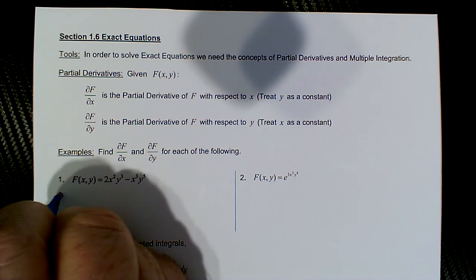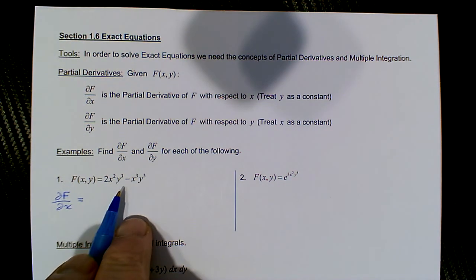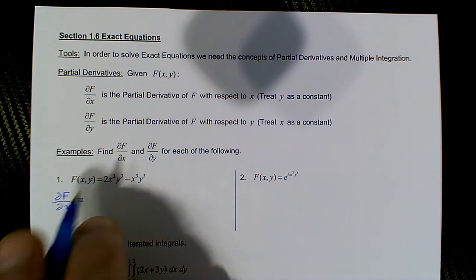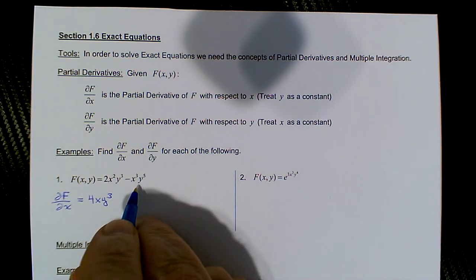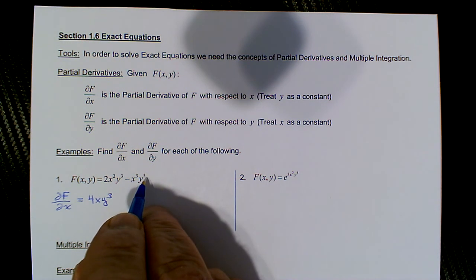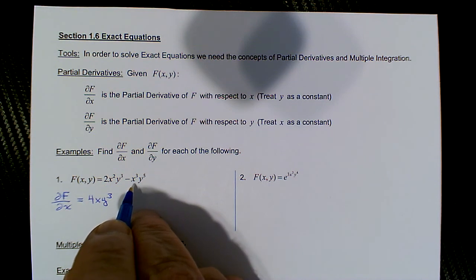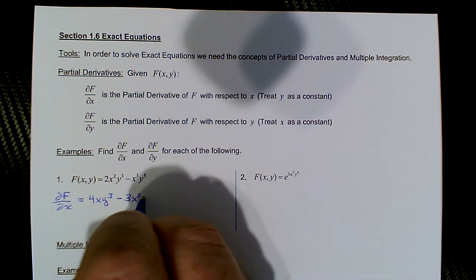The partial of f with respect to x: y is being held as a constant, so in the first term this y³ is really just going to tag along in the differentiation process. We're just considering differentiating 2x² to get 4x, and then the y³ just tags along, so that term would be 4xy³. Similarly in the second term, the y⁵ tags along as a constant multiple and we're just differentiating −x³, whose derivative is −3x², so we'd have −3x²y⁵.